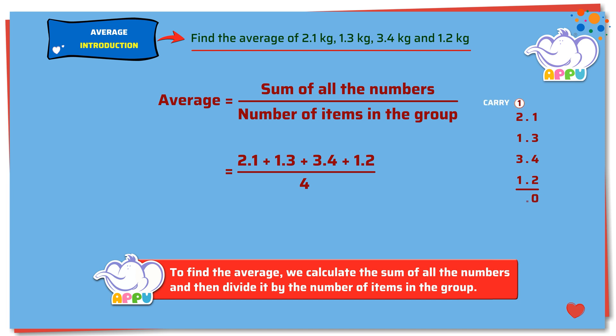The sum is 8.0 which is the same as 8. This becomes 8 divided by 4, which is equal to 2. The average of the given values is 2 kilograms.